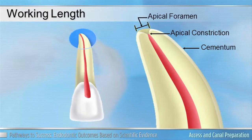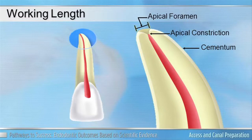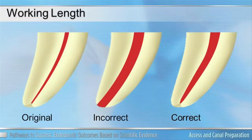Urie Cutler very eloquently described the difference between the apical constriction and the apical foramen. The apical foramen is what you most commonly experience when you look at a radiograph and try to determine whether your file is at the right length. However, through his research we found that the apical constriction, which is also the CDJ, is the area in which we want to instrument to and obturate to for our optimal results.